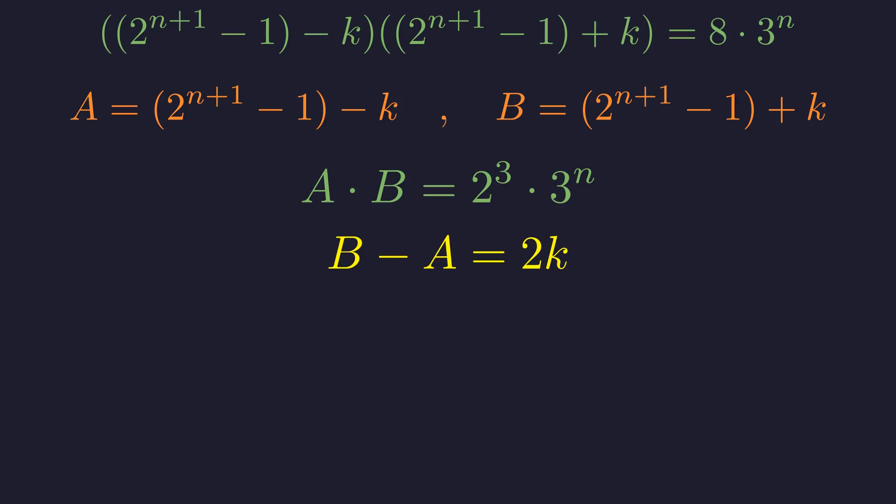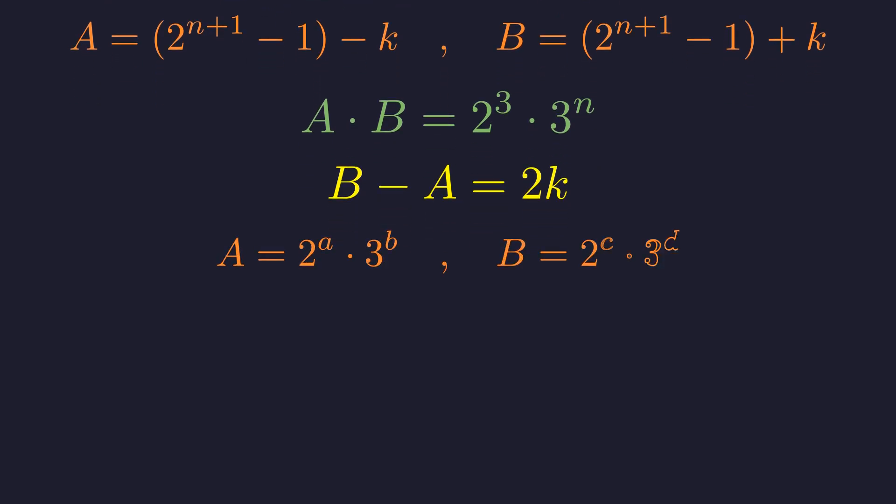This conclusion is significant. Both a and b are even factors of the product. This constraint severely limits their possible forms. Therefore, a and b must have prime factorizations of this form, where the exponents a and c sum to 3, and b and d sum to n. Specifically, a plus c equals 3, and b plus d equals n. The condition that both a and b are even implies that their respective exponents of 2, a and c, must be at least 1. The only partition of 3 into 2 positive integers is 1 and 2. This splits the analysis into two distinct scenarios for the exponents a and c.